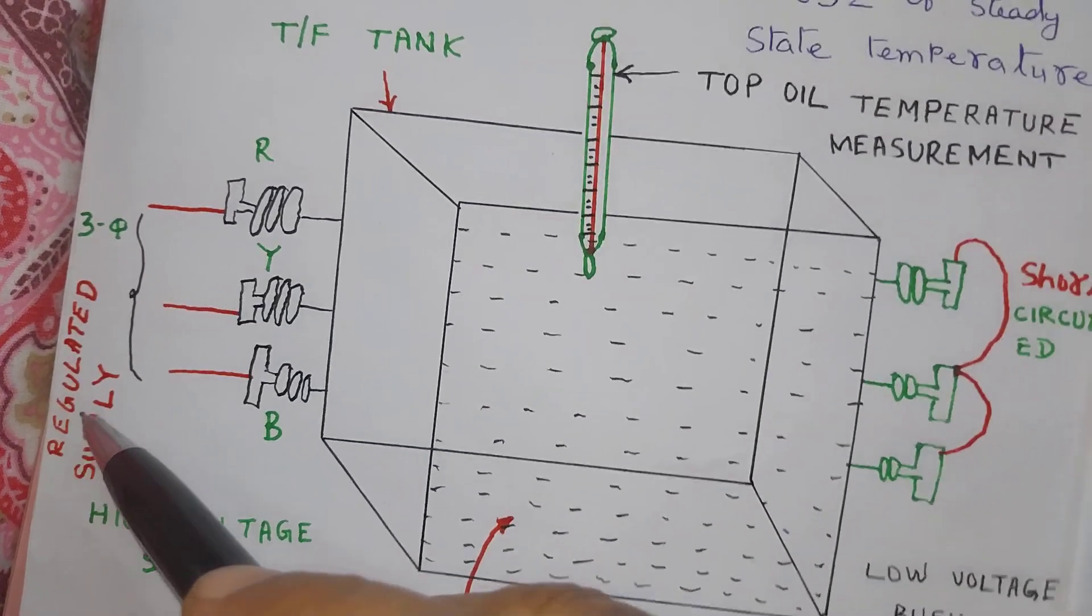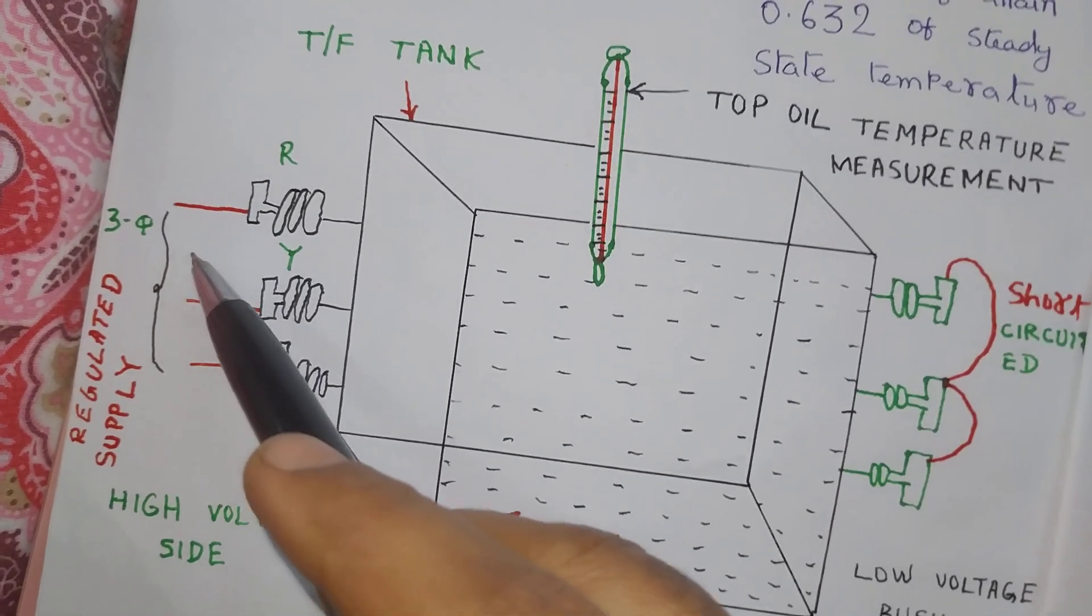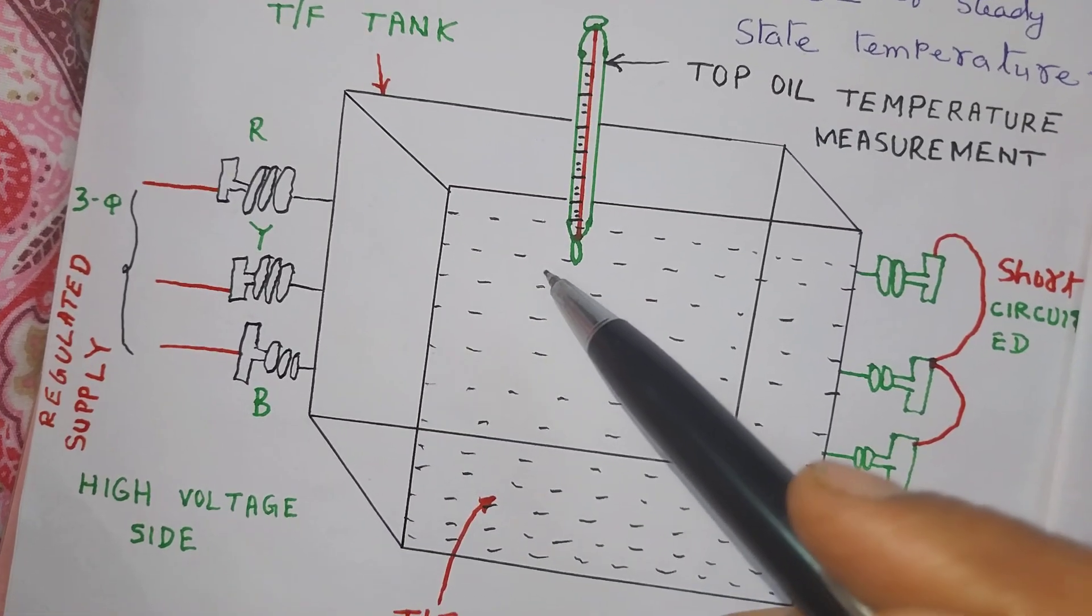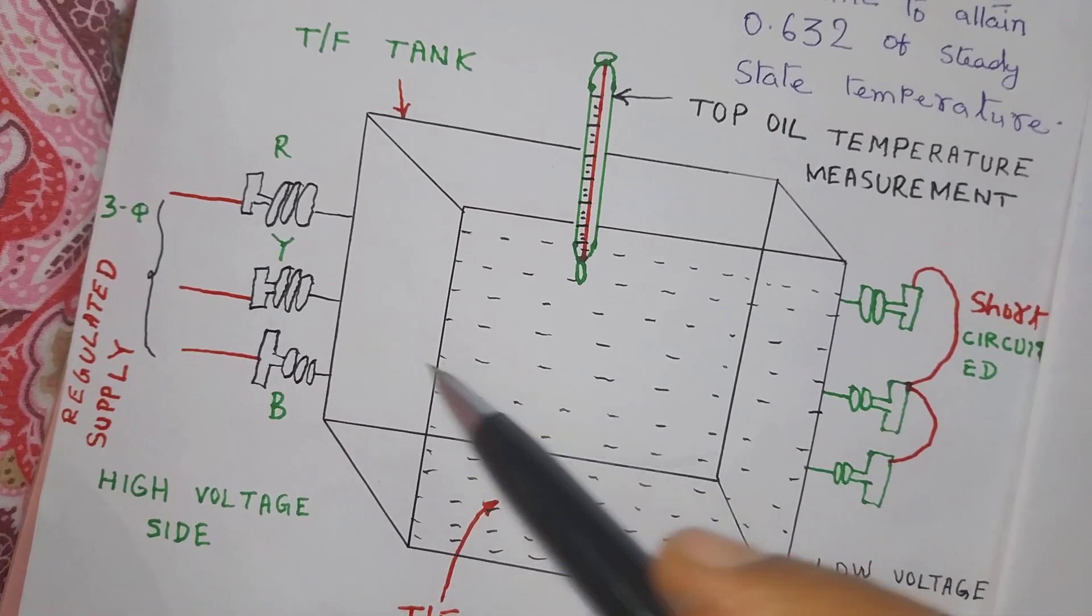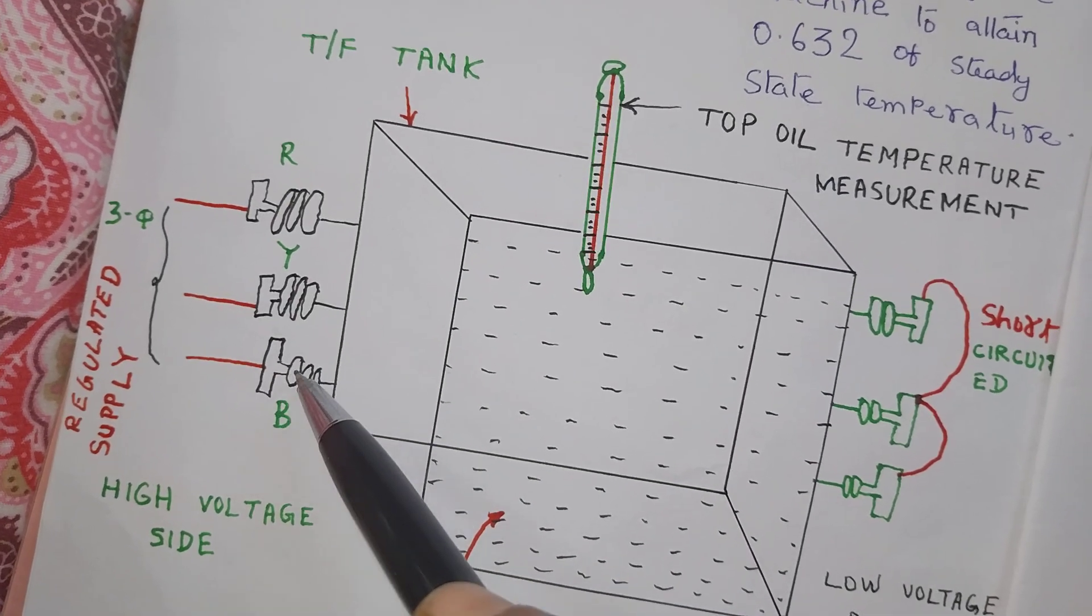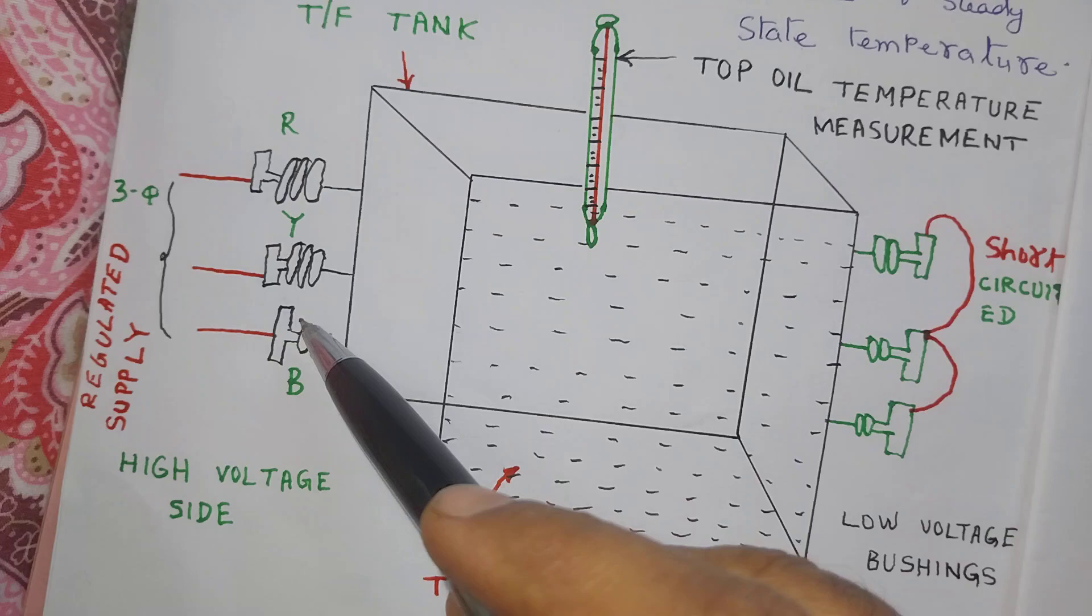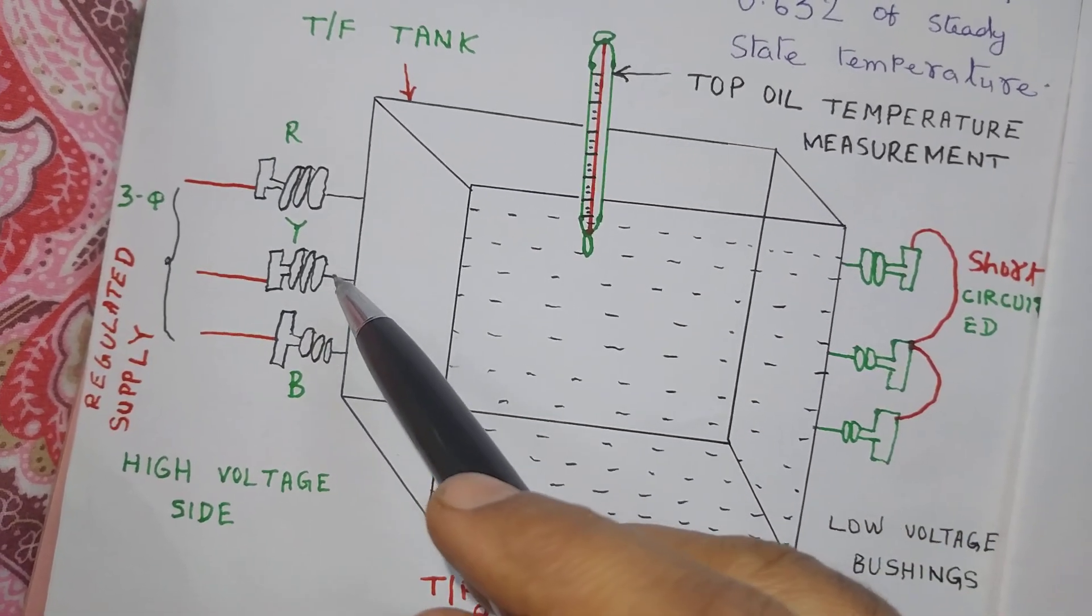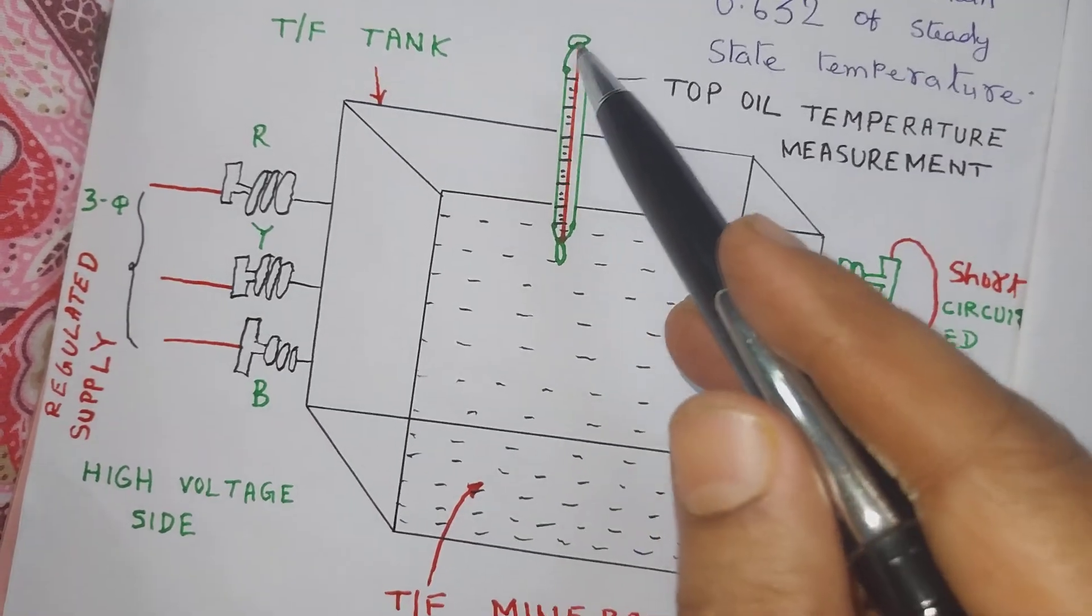The voltage just enough is supplied to meet the requirement of total losses of the transformer. This is almost a little more than the impedance volt or percentage impedance of the transformer. This is top oil temperature measurement thermometer.